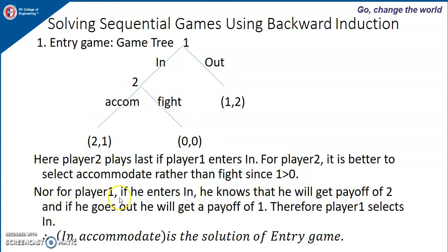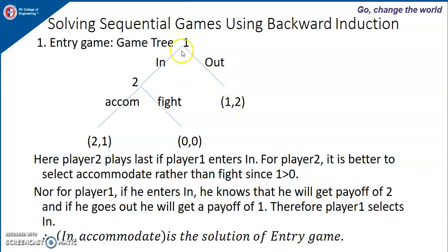Now for player 1, if the player enters in, he knows that he will be getting a payoff of 2, and if he goes out he will get a payoff of 1. Therefore, for player 1 it is better that he enters inside. Therefore, 'in, accommodate' is the solution of the entry game.